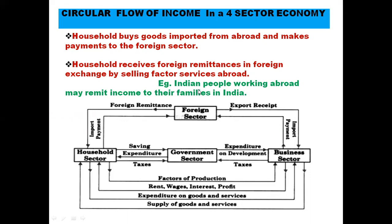Households also receive foreign remittances in foreign exchange by selling factor services abroad. For example, Indian people who work abroad may remit income back to their families in India - transferring their income to Indian households. So foreign remittances flow from the foreign sector to the household sector.